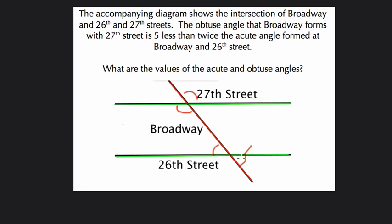So if this angle right here is x, then this angle right here is 5 less than twice x, or 2x minus 5.